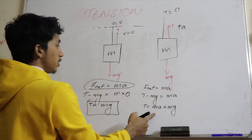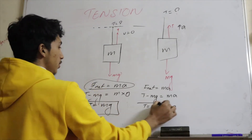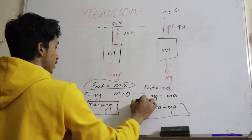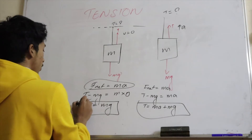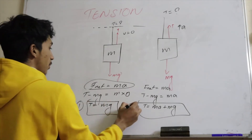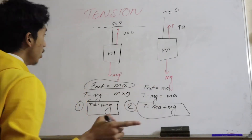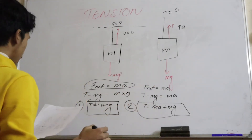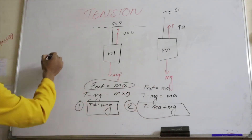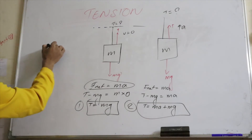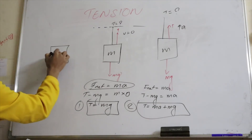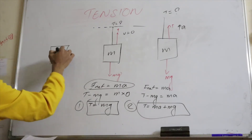Since the acceleration is not zero here, we can directly state that tension equals ma plus mg. This is the second case.